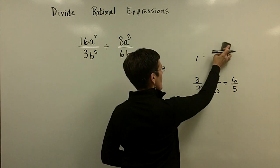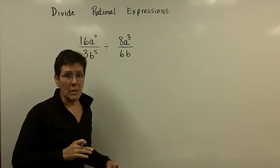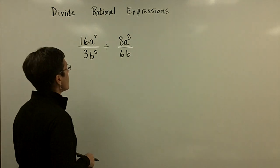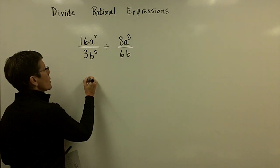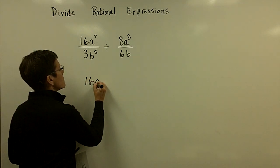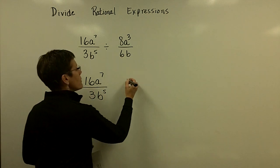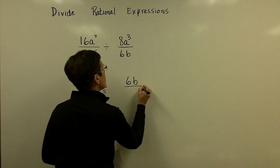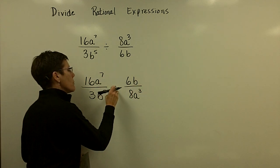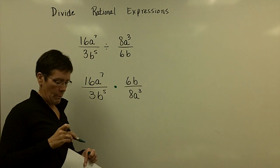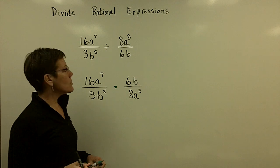I like to always illustrate with arithmetic first, but this is just monomials so no factoring is required. What I'm going to do is skip — copy this fraction down — and then flip this one and multiply by the reciprocal of the second fraction.